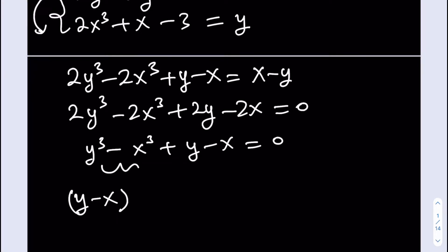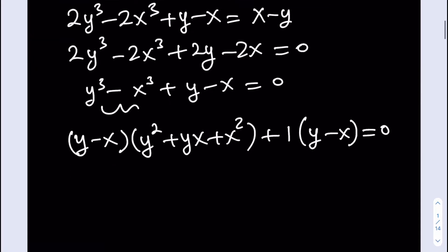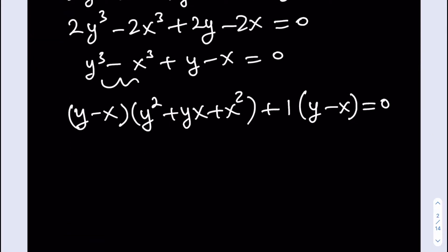I'm going to factor these two terms, which is y-x. We call that difference of two cubes: y²+yx+x². And then plus 1 times (y-x). We're getting there. At this point, I'm going to factor out the y-x because that's a common factor. And then what am I going to have? y²+yx+x²+1, and the whole thing is equal to 0.